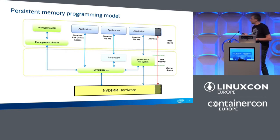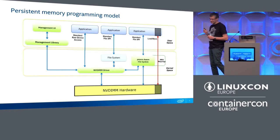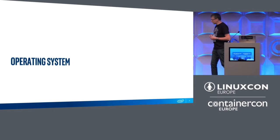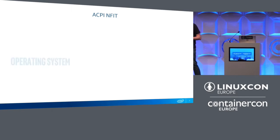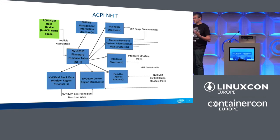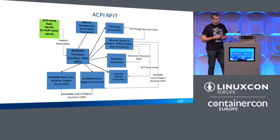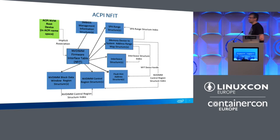Basically, entire maintenance of the data and all the bookkeeping around it needs to be handled by your applications, which is quite complicated. So we'll get back to this model a bit more. But this is the basics of what we are talking about. How does this hardware look to the operating system? At first, we have the ACPI NFIT tables which are standardized, and by what is exposed to the kernel, we can already see some of the capabilities.